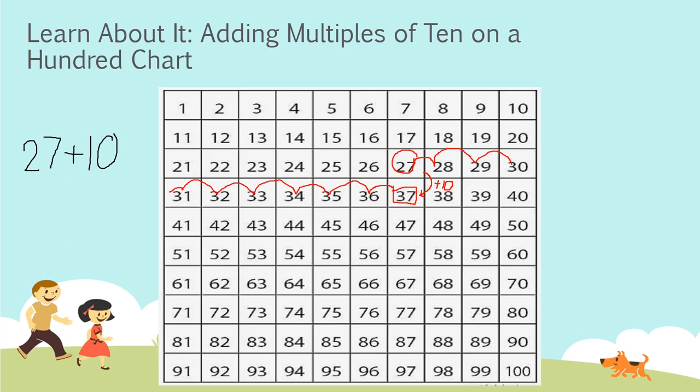You may have also noticed that there are two tens and seven ones in 27. In 37, there are now three tens and seven ones. There are three tens since we added one and the seven stays the same.